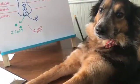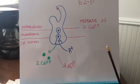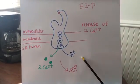In step two, the release of the calcium ions allows binding of hydrogen ions to the pump. This changes the conformation to E2P.